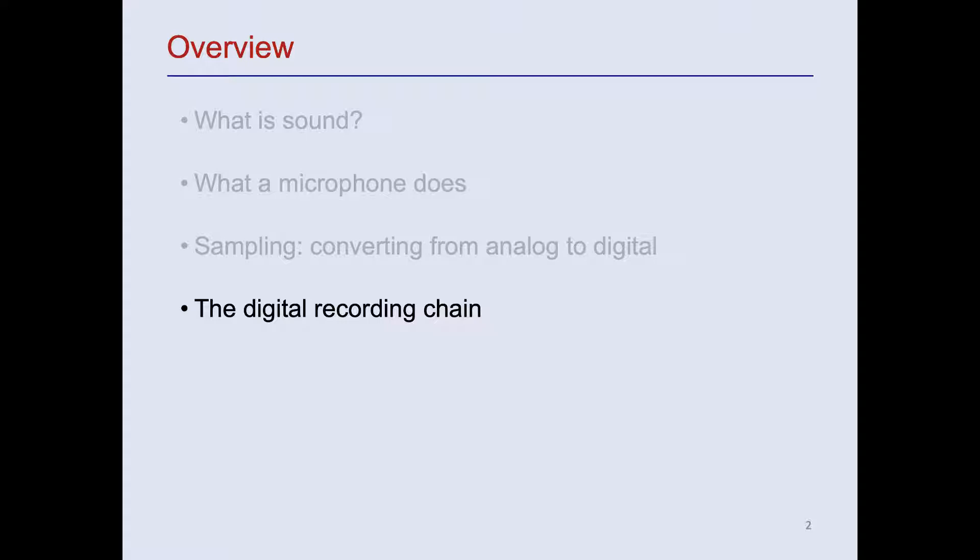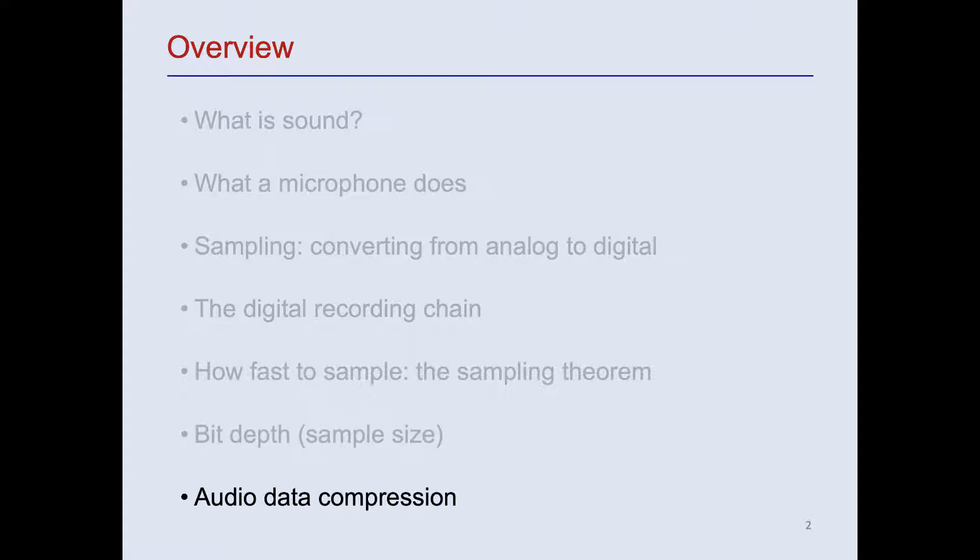Here's an overview of what we'll cover in this video. We'll begin by briefly describing what sound is and what a microphone does. We'll then explain what we mean by sampling, which enables us to convert a continuous analog signal to a form that can be stored and processed on a digital device. We'll talk about the digital recording chain, meaning the various stages of converting and processing a sound so it can be stored and worked with on a digital device. We'll talk about sampling rate, the sampling theorem, and why that's important, and also about bit depth. Finally, we'll talk briefly about audio data compression using formats like MP3 and FLAC and the pros and cons of data compression.